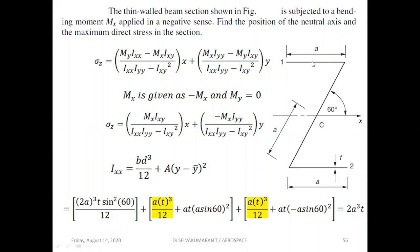For the top flange, add bd³/12, which is at³/12, plus area (at) times the vertical distance squared, which is (a·sin60)². The bottom flange gives minus a·sin60 for y. Using thin-wall approximations, we neglect higher powers of t (t³ terms). Simplifying gives Ixx = 2a³t.